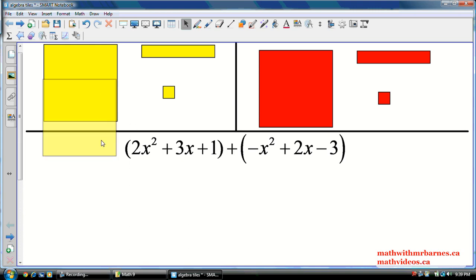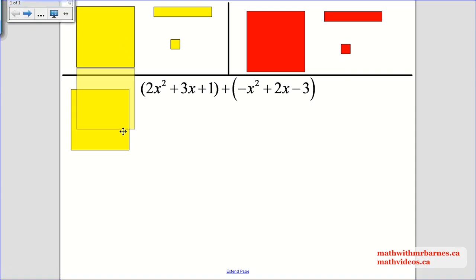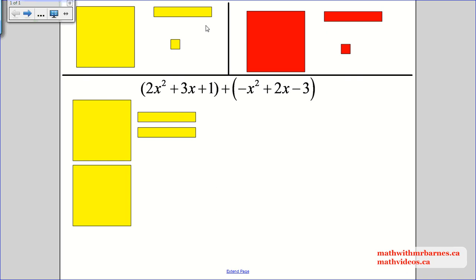Alright, so I got 2x squared, so I got two of these bad boys. Let me go full screen. So, two of these guys, and then I got three of these guys, so I got 1, 2, 3, and then one of these guys. So, this is 2x squared plus 3x plus 1. And then this guy, I've got a negative x squared, so I've got a red one. If you're forgetting, these are positive and these are negative.